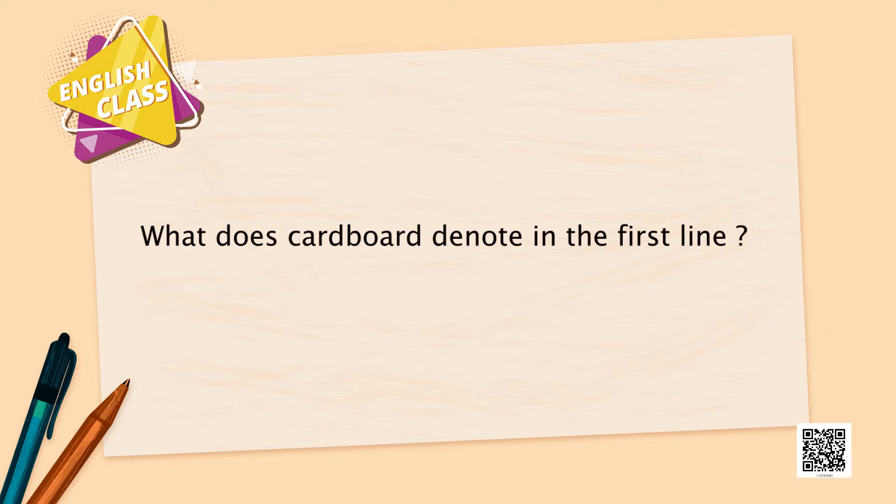Now let us have some discussion questions. What does 'cardboard' denote in the first line? The cardboard must be a frame on which the photograph was placed — that is the physical aspect. What does it suggest? It suggests oldness, the passage of time. What is 'paddling'? Paddling can mean rowing a boat, but it also means walking on the seashore where water comes and touches your feet — that is also paddling. That is why when we go on picnic, school children go paddling. Who is the big girl? The eldest one described in the poem is the poet's mother.